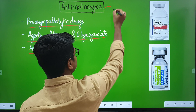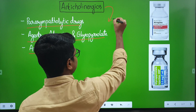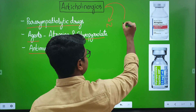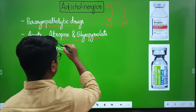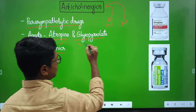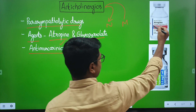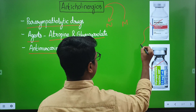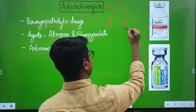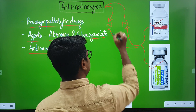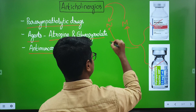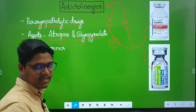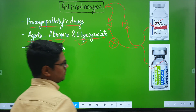These two drugs are known as anti-muscarinics. Why? Cholinergic receptors are of two types: one is nicotinic and the other is muscarinic. Atropine and glycopyrrolate act on muscarinic receptors. They do not act on nicotinic receptors. That is why the proper term is anti-muscarinic agents.